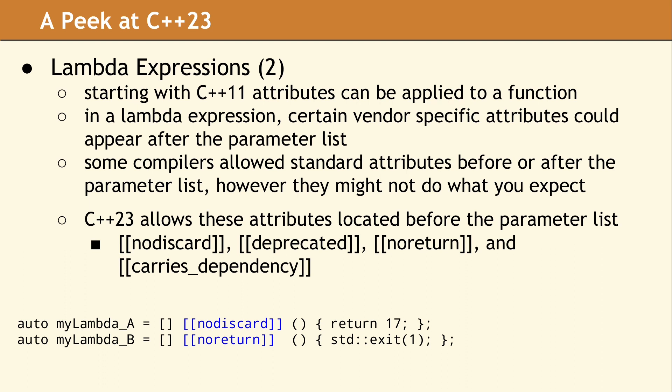The behavior was also influenced based on where the attribute appeared within the lambda expression. Starting with C++23, four existing attributes can be used, and they need to appear directly after the capture clause. Thankfully, the standard has now been improved so every compiler vendor can support lambda expression attributes in the same way.